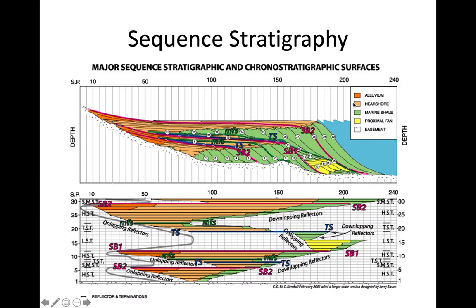Here we see a number of different depositional environments: alluvium, a river, nearshore, marine shale, proximal fan, and basement. What we see is a vertical stacking pattern that changes — that's Walther's Law. Environments that extend horizontally stack vertically in the rock record. We can see that the marine shale once extended much further inland, and rivers once extended much further out, representing a time of massive regression or progradation where the shoreline extended further out because sea level was falling.